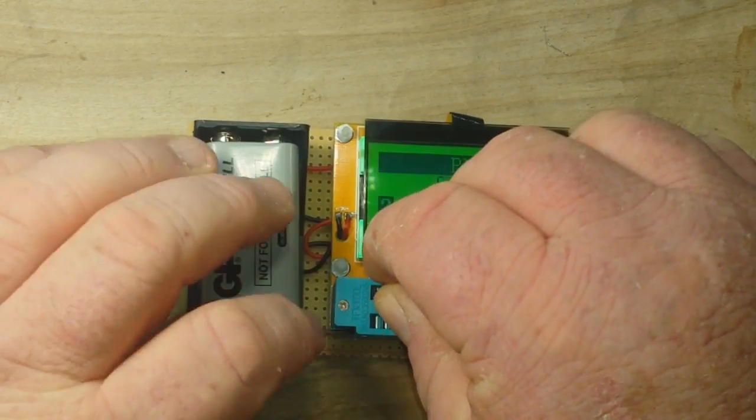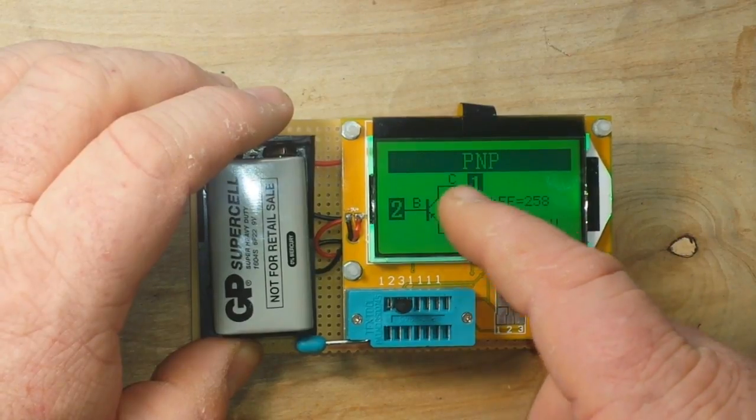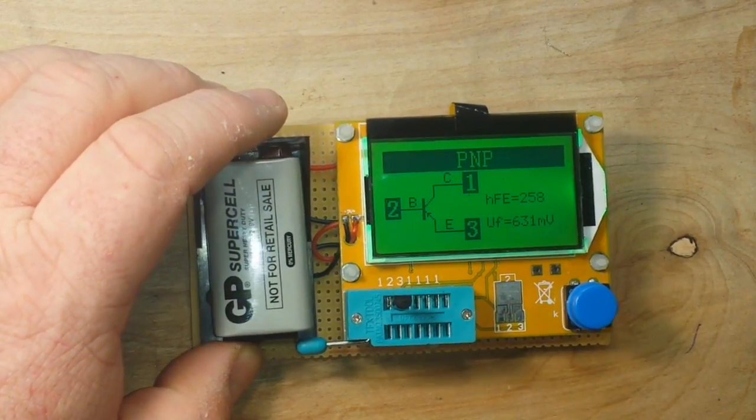And it is smart enough that if you put it in backwards, it can usually figure it out. Collector base emitter, one, two, three, just like that.